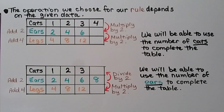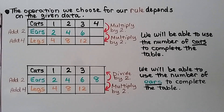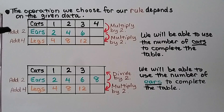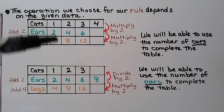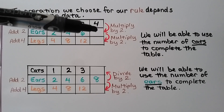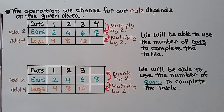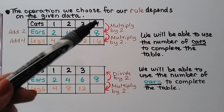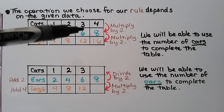The operation we choose for our rule depends on the given data. If we have one cat, it has 2 ears and 4 legs. If we have two cats, it will have 4 ears and 8 legs. For this sequence we add 2 for ears, and add 4 for legs. To go from cats to ears, we multiply by 2. To go from ears to legs, we multiply by 2. For 4 cats: 4 times 2 is 8 ears, and 8 times 2 is 16 legs. For 3 cats: 3 times 2 is 6 ears, and 6 times 2 is 12 legs.